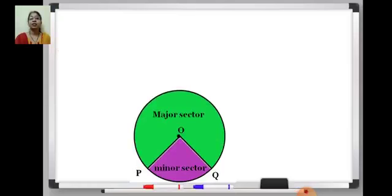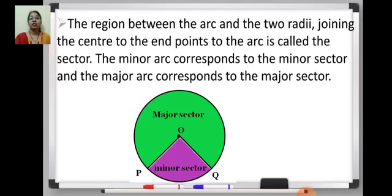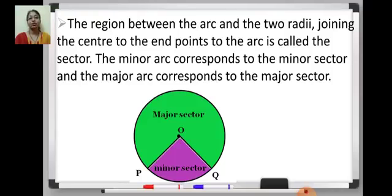Then comes sector of a circle. A sector is the area bounded by two radii and the corresponding intercepted arc. The region shown in purple color is the sector of the circle. When the arc is a minor arc, the corresponding sector is the minor sector. And if the intercepted arc is the major arc, then the sector is the major sector. The region between the arc and the two radii joining the center to the endpoints of the arc is called a sector.